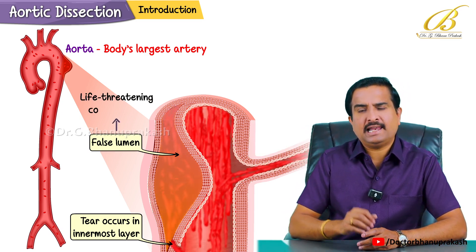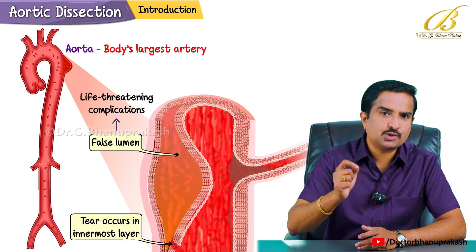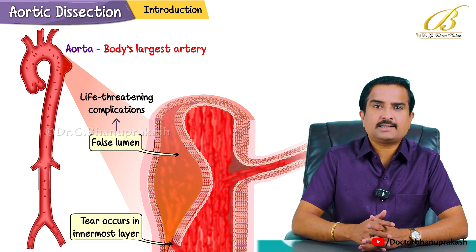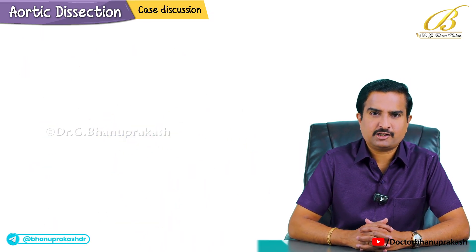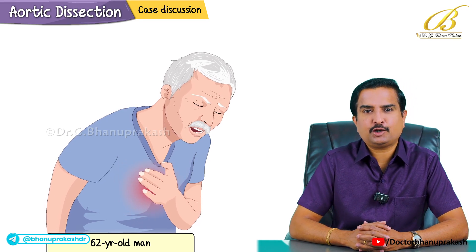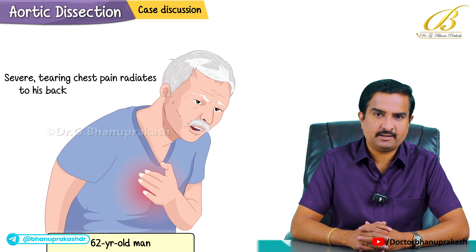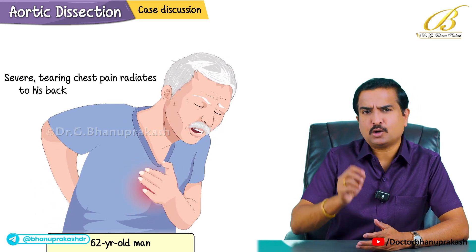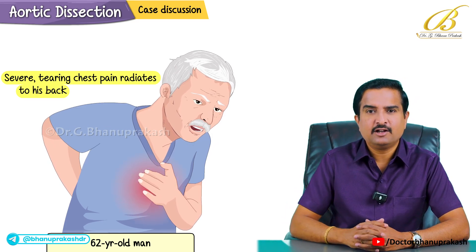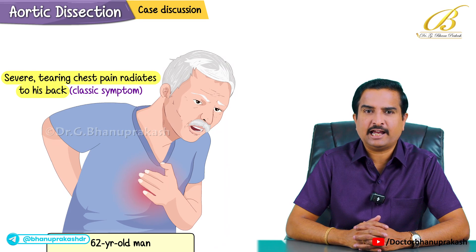This can lead to life-threatening complications, so it's crucial to recognize and manage it properly. Let's start with the case presentation. Picture a 62-year-old man presenting to the emergency department with severe tearing chest pain that radiates to his back — this is a classical symptom to identify aortic dissection.